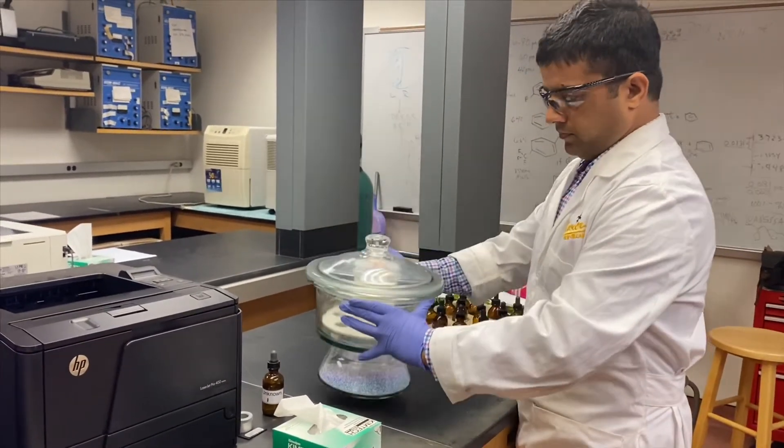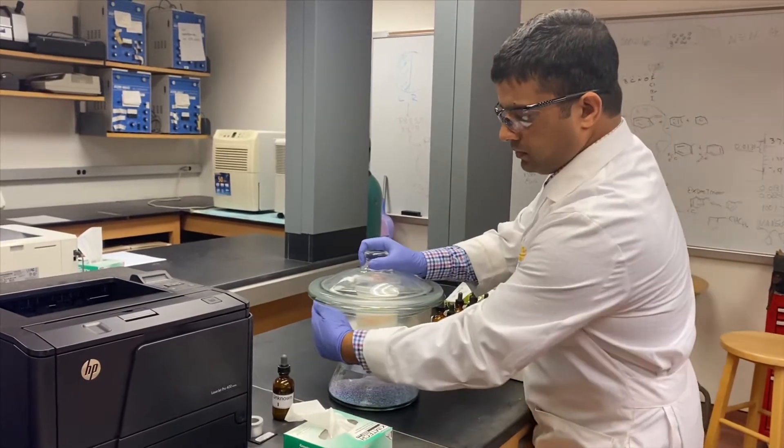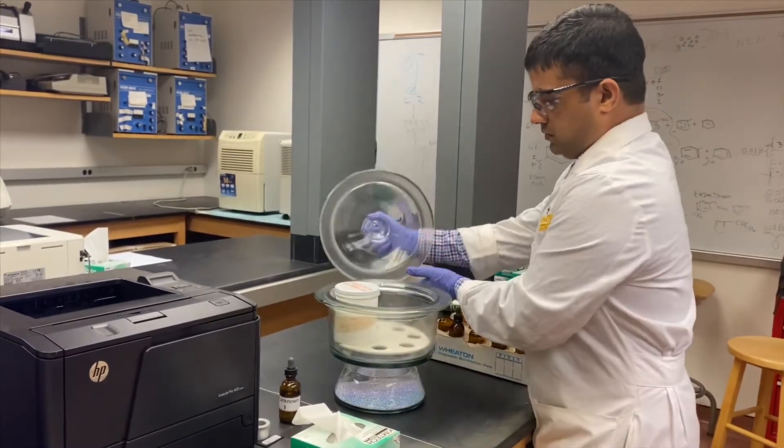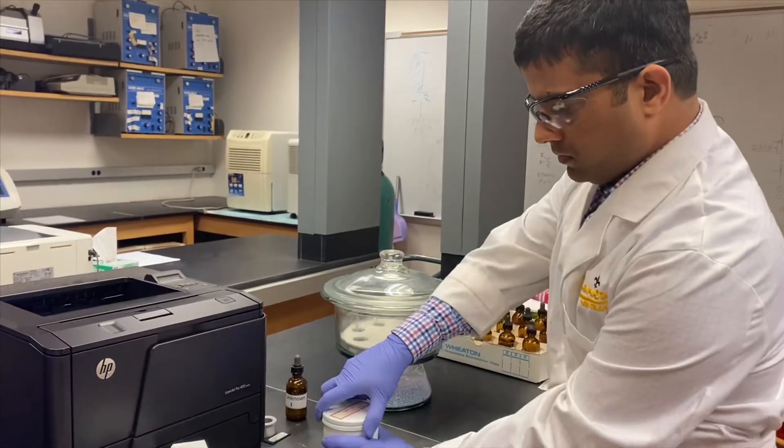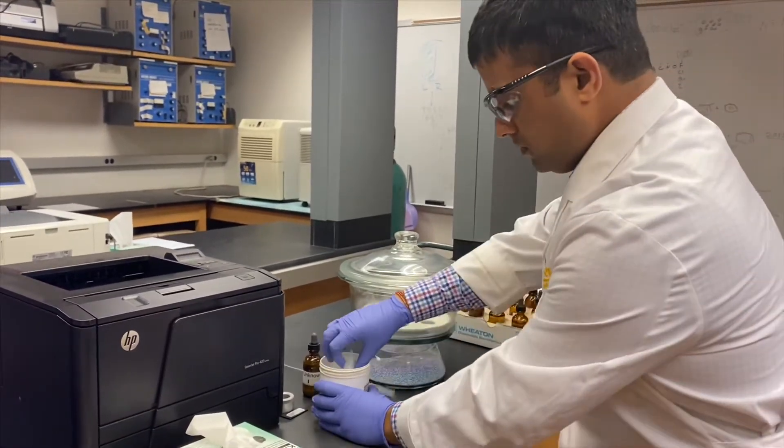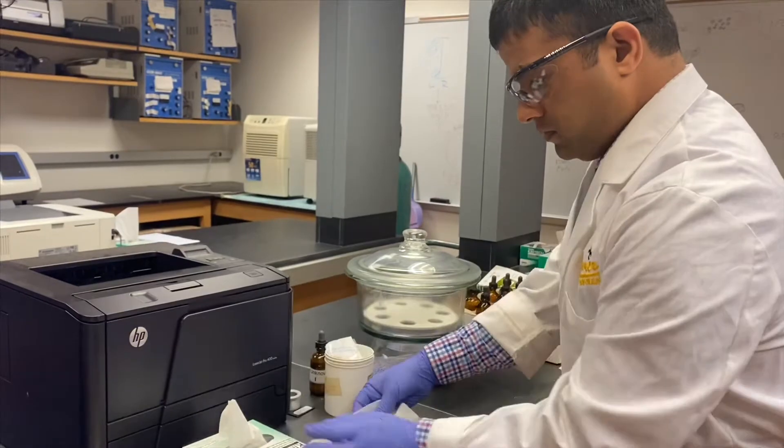This is a desiccator where we place material to avoid moisture from air. Slide it and take out the box of IR plates and place two salt plates on kim wipes.